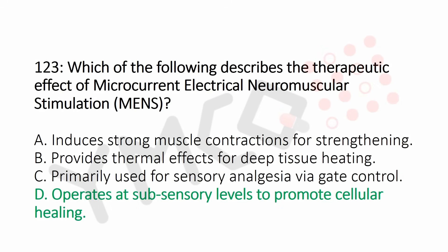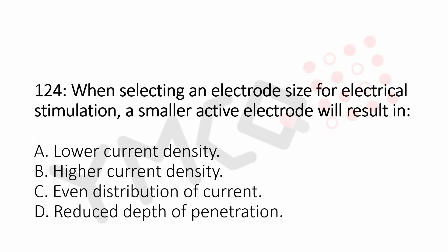Question number 124: When selecting an electrode size for electrical stimulation, a smaller active electrode will result in: Option A: lower current density. Option B: higher current density. Option C: even distribution of current. Option D: reduced depth of penetration. And the answer is Option B: higher current density.